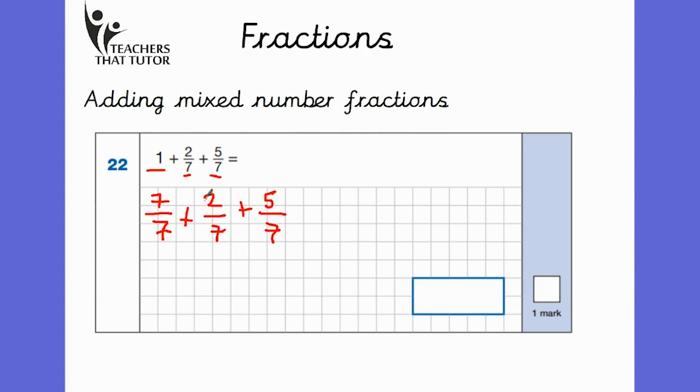7 7ths, add 2 7ths, add 5 7ths. So 7 and 2 is 9, 9 plus 5 is 14. 14 7ths. What you may also notice is that we could actually convert this now from an improper fraction, where the numerator is bigger than the denominator, to a mixed number or a whole number in this case.